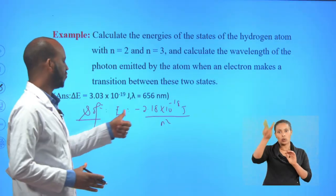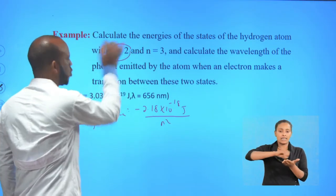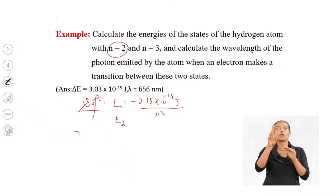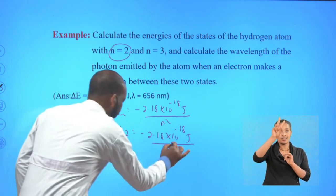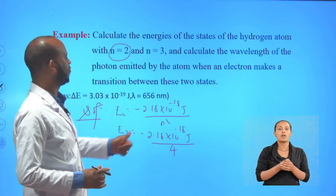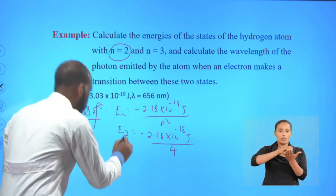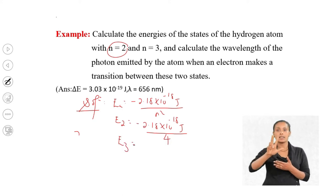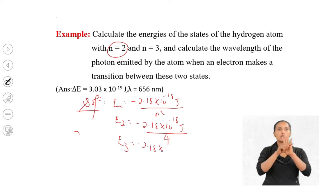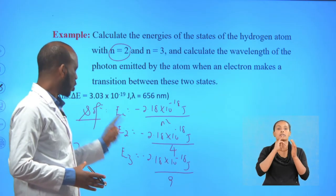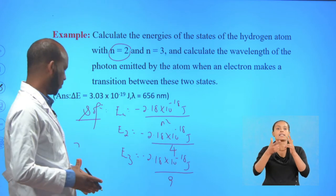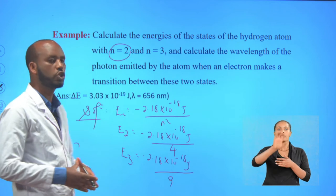Therefore, the energy of an electron in the second orbit (n = 2) is E₂ = −2.18 × 10⁻¹⁸ J / 4. The energy of an electron in the third orbit (n = 3) is E₃ = −2.18 × 10⁻¹⁸ J / 9. These are the energies of electrons in the second and third orbits respectively.